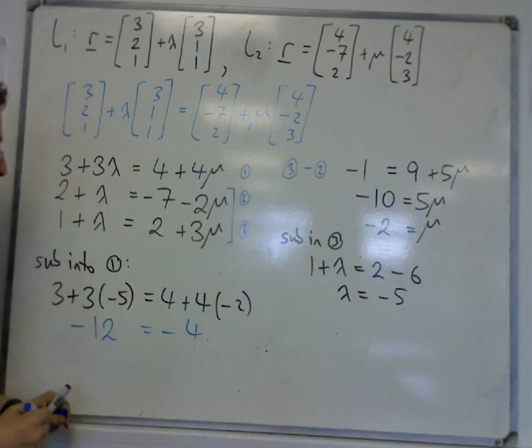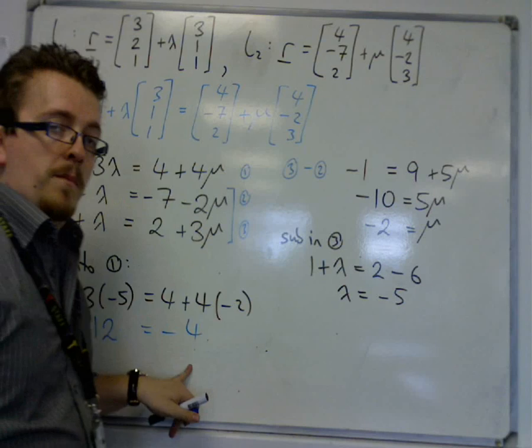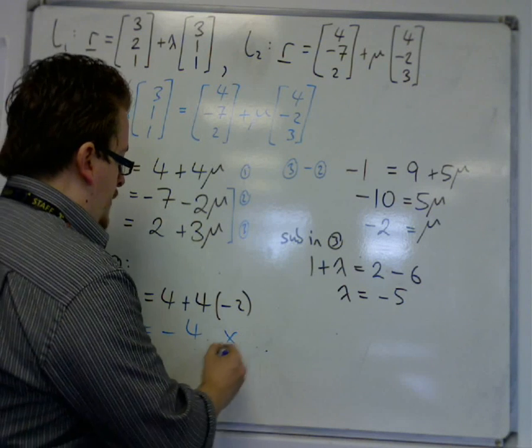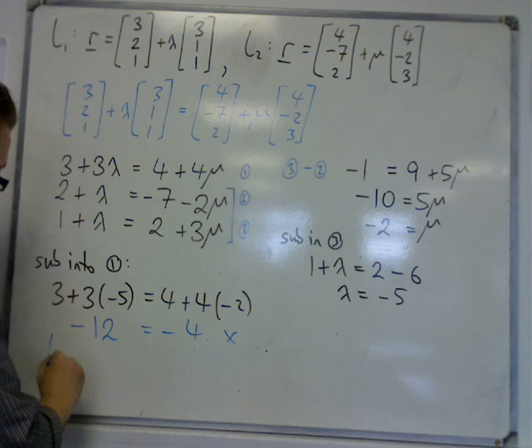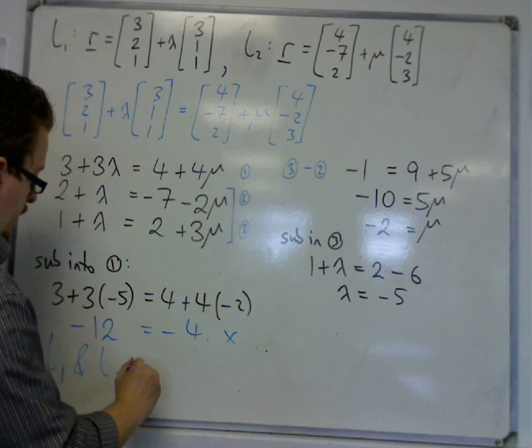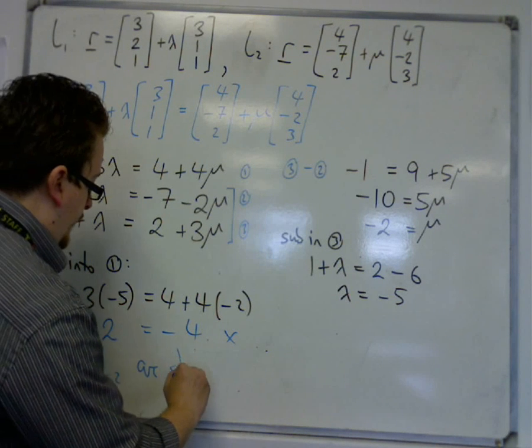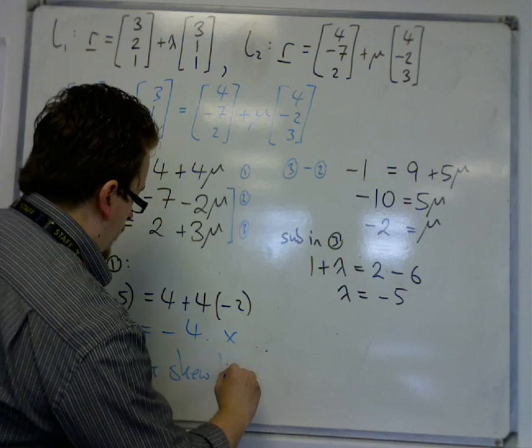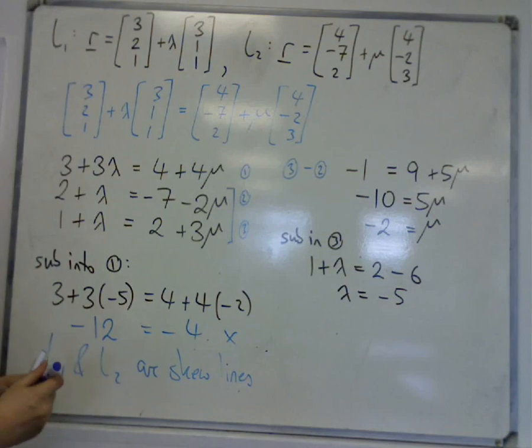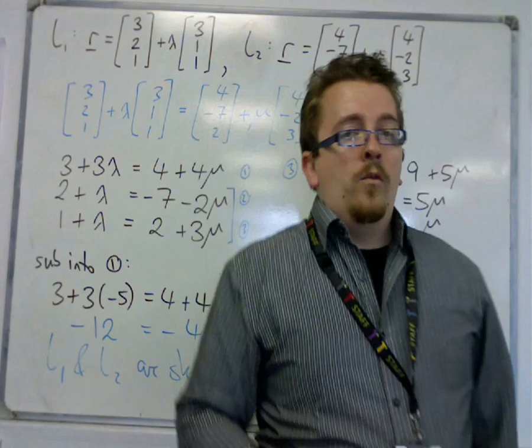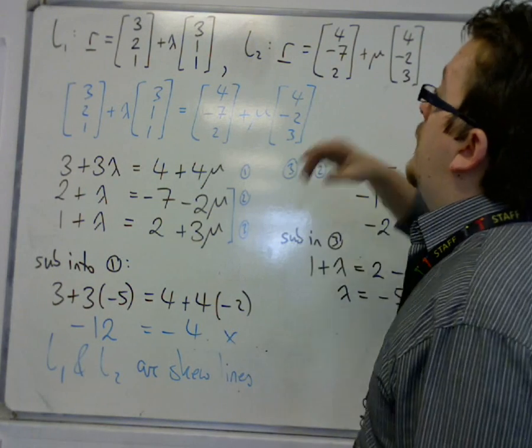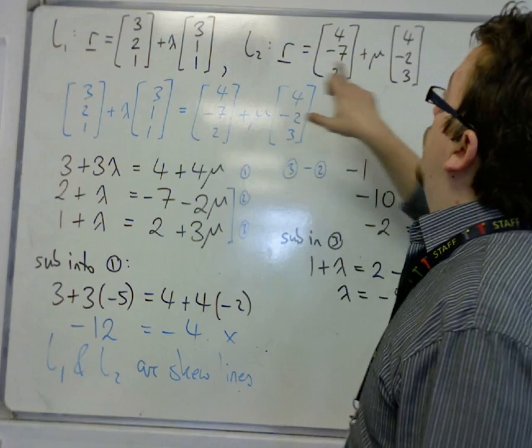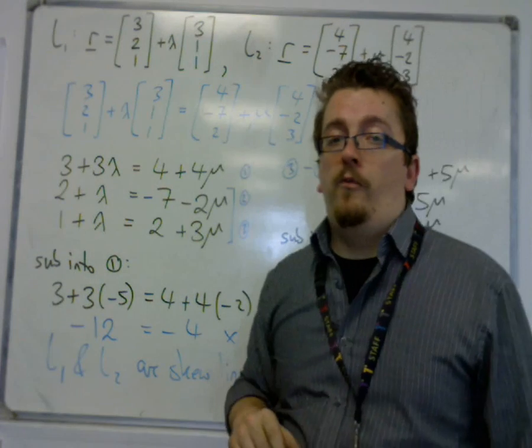So what we've got down to is minus 12 equals minus 4, which we know is not right. So this means that L1 and L2 must be skew lines - they do not intersect - and we can tell that they are not parallel because the direction vectors are not multiples of one another.